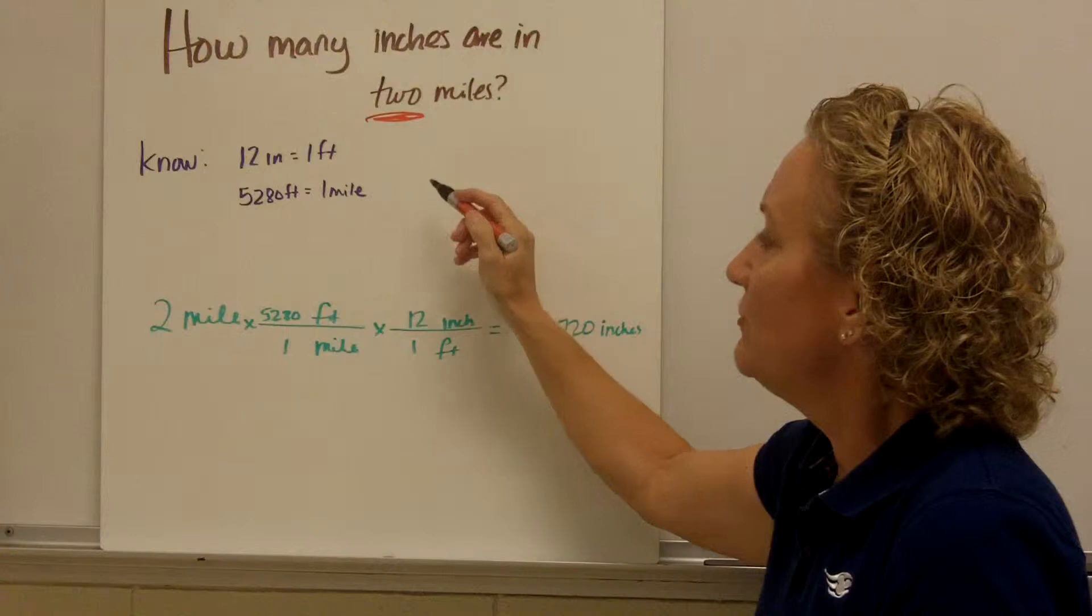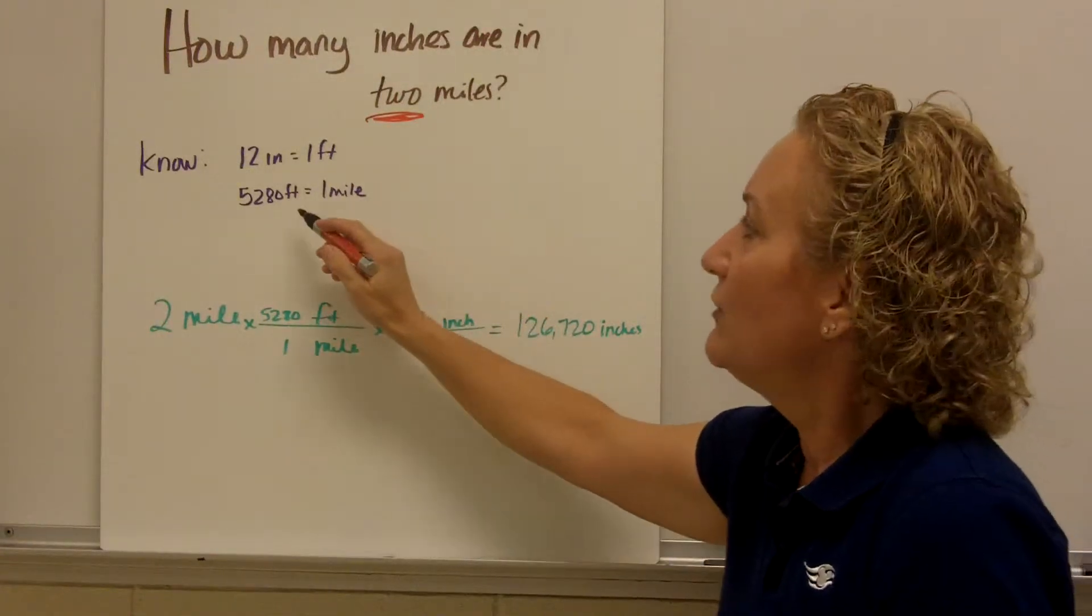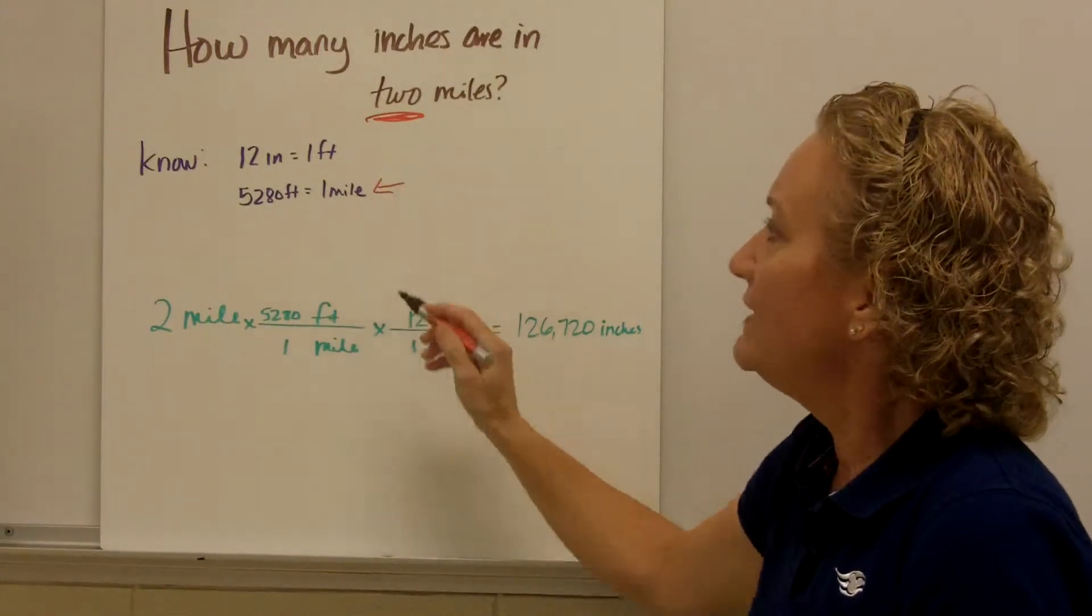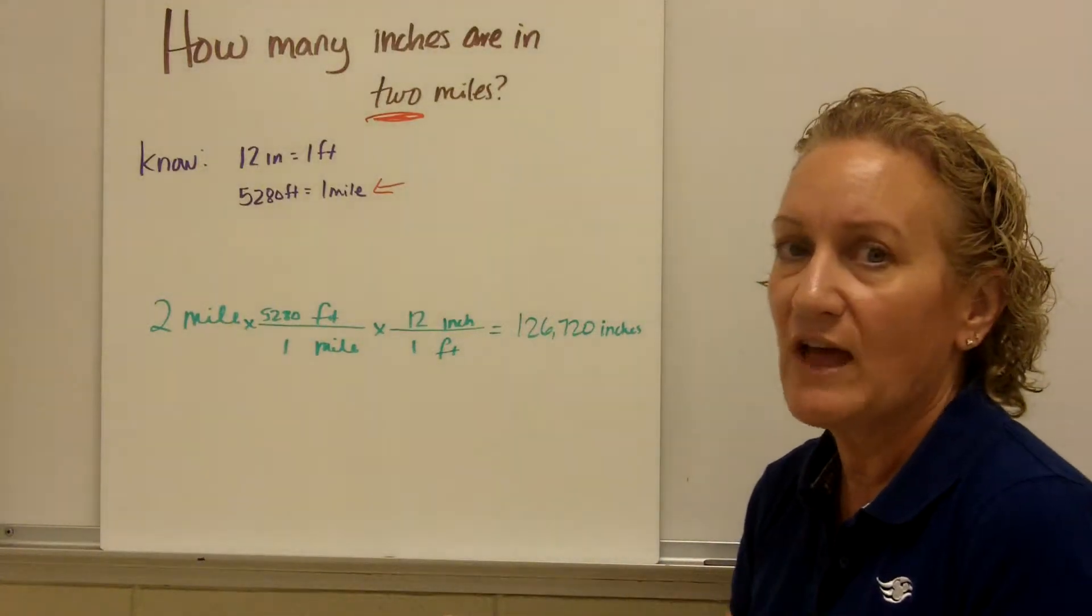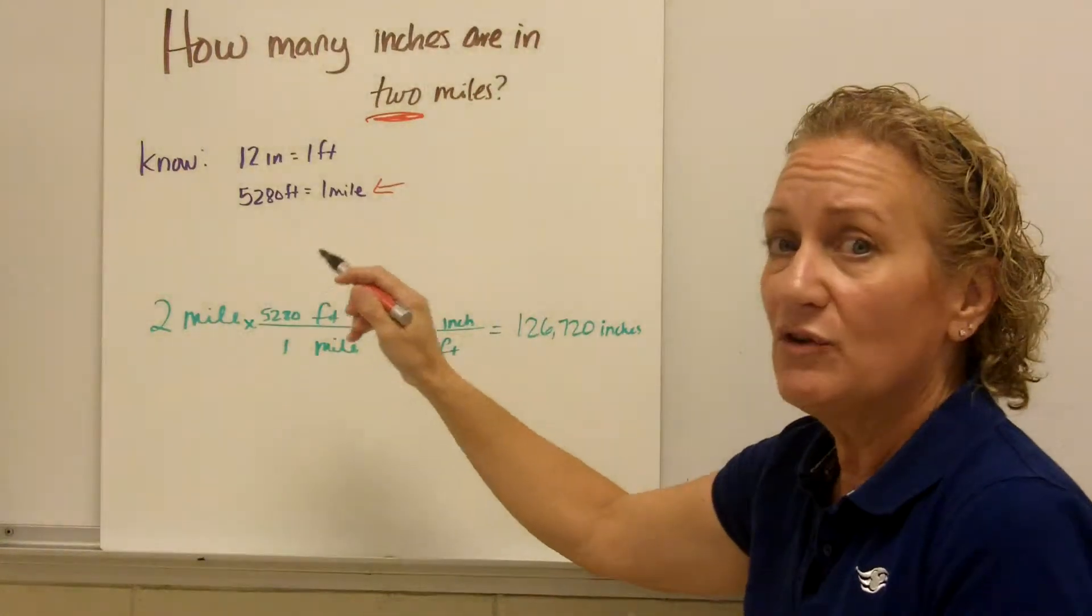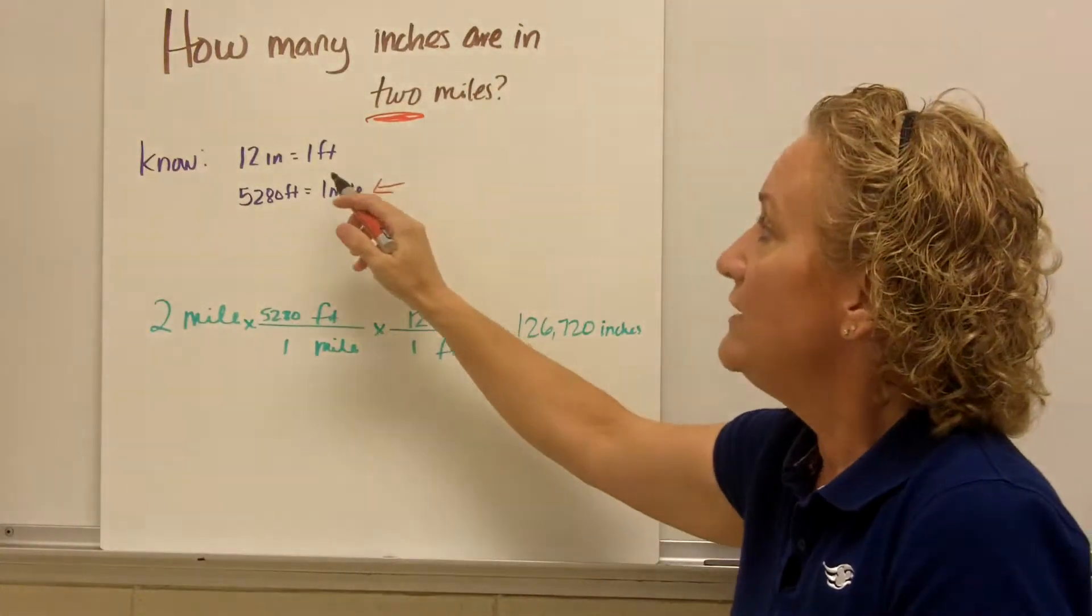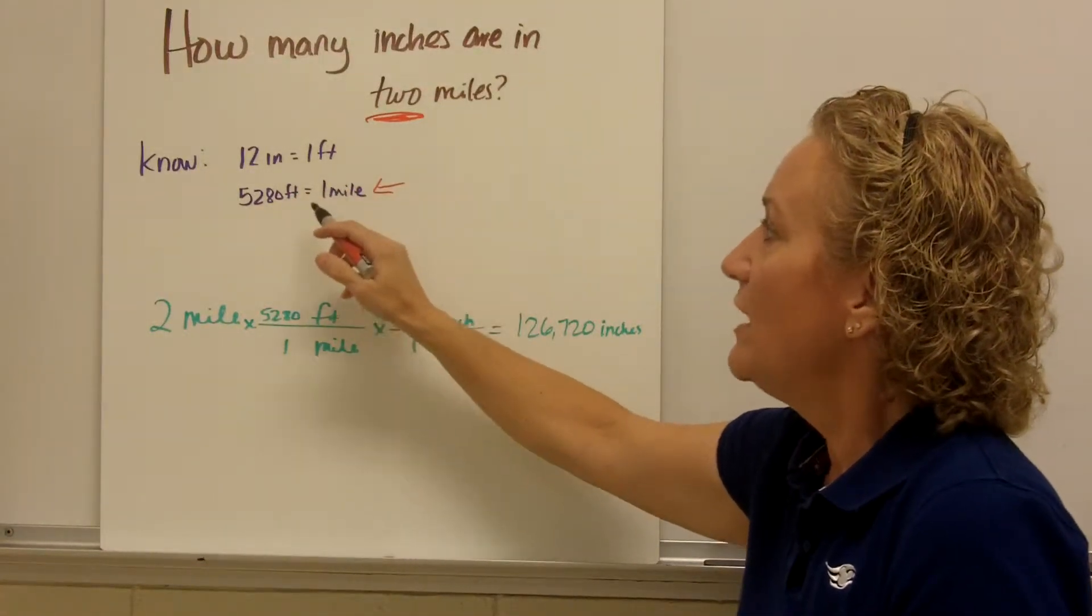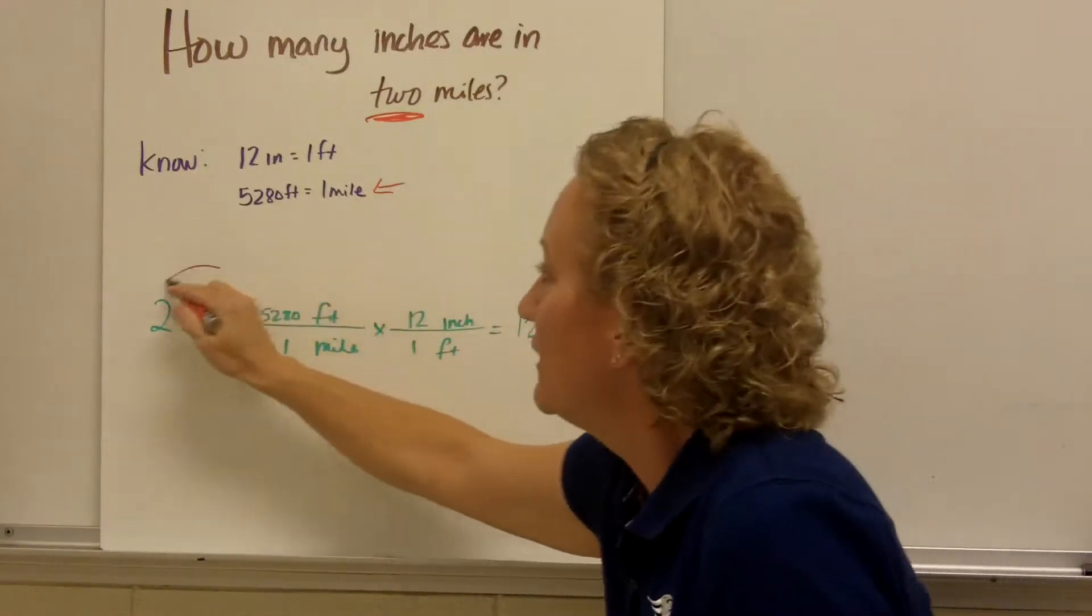So how many inches are in two miles? Well, I know that 12 inches are one foot. And I know that 5,280 feet is one mile. You may not have known that, in which case you have to look something up. You have to have a conversion factor from one to the other. You might have gone feet to yards, and maybe you know yards to miles. So you could have gone feet to yards in here. Three feet is one yard. And then yards to miles. So again, start with what I know. I know two miles.